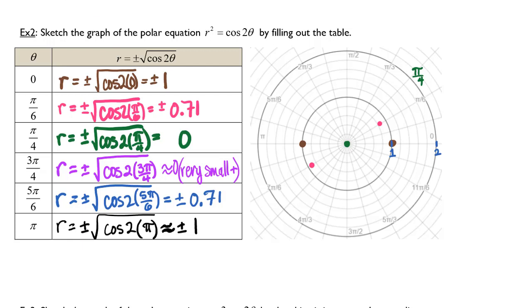At 3 pi over 4, my radius is so tiny that it's basically 0. So tiny.